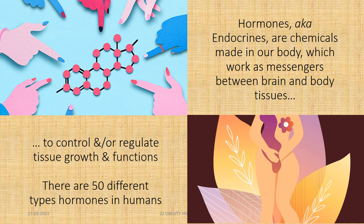Hormones, also known as endocrines, are chemicals made in our body which work as messengers between brain and body tissues, to control and regulate tissue growth and functions. There are 50 different types of hormones in humans.